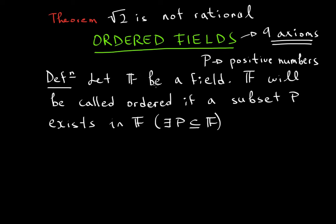So if you have a field, then that field will be called an ordered field if there exists some sort of positive numbers. If you research online or read some sort of real analysis book, you will find out that some weird fields can be ordered.